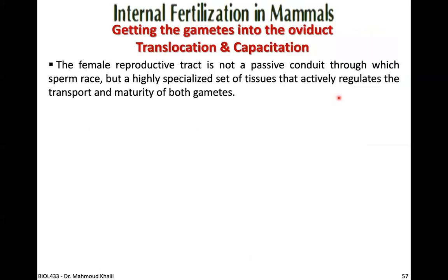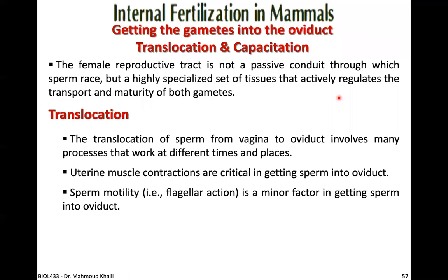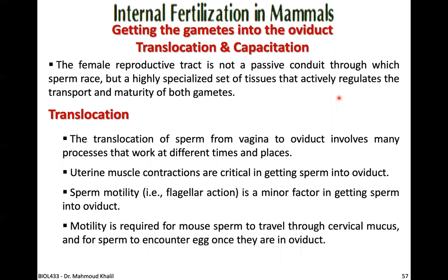Getting gametes into the oviduct involves two important mechanisms: translocation and capacitation. The female reproductive tract is not a passive conduit — it is a highly specialized set of tissues that actively regulates the transport and maturation of both gametes. Uterine muscle contractions are critical for getting sperm into the oviduct, while sperm motility from the flagella is a minor factor. Motility is required for sperm to travel through cervical mucus and to encounter the egg once in the oviduct.